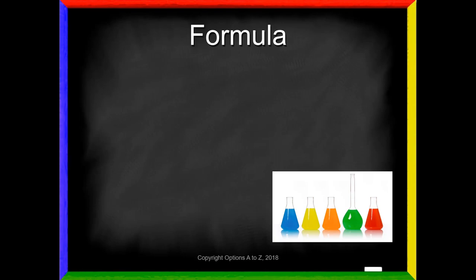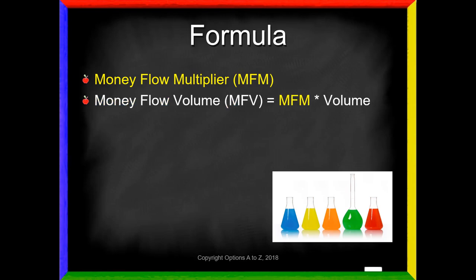The formula for the Chaikin Money Flow looks a little convoluted, like all technical indicators do, but once you break it down, you'll find it's not so bad. First, he calculates what's called a money flow multiplier, or MFM — that's the longest calculation you'll have to do. Once we have that number, you then need to calculate the money flow volume, or MFV. That is simply found by taking the MFM from step one and multiplying it by the stock's volume.